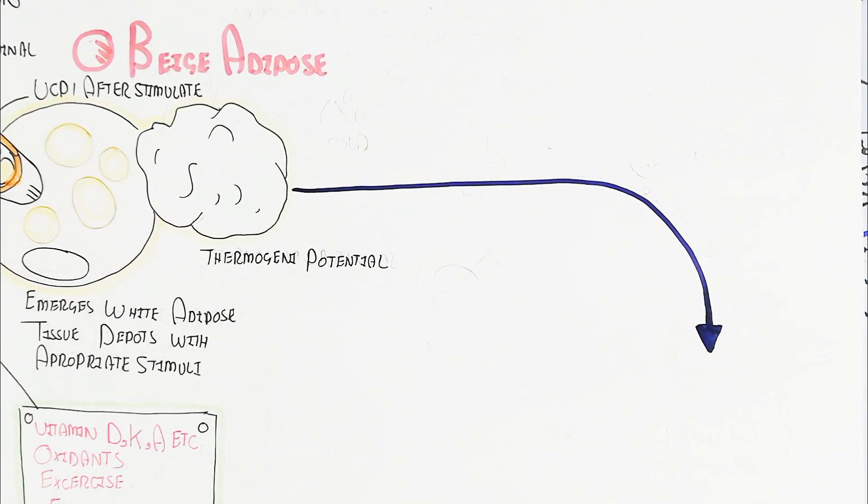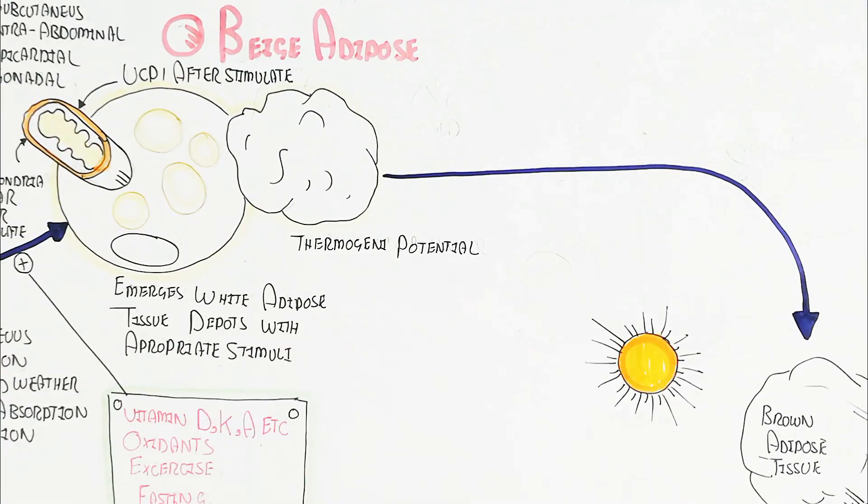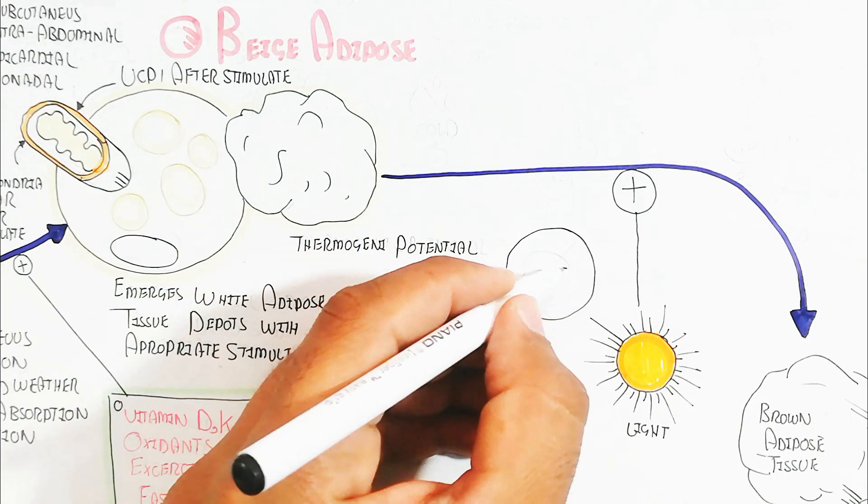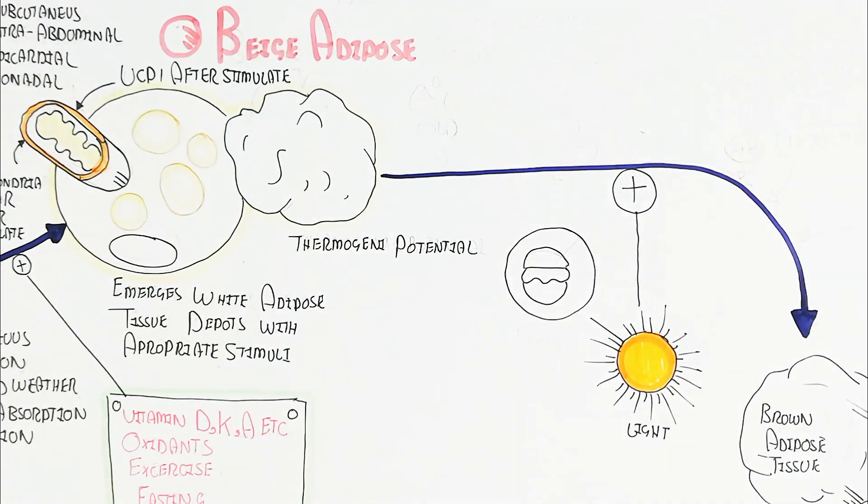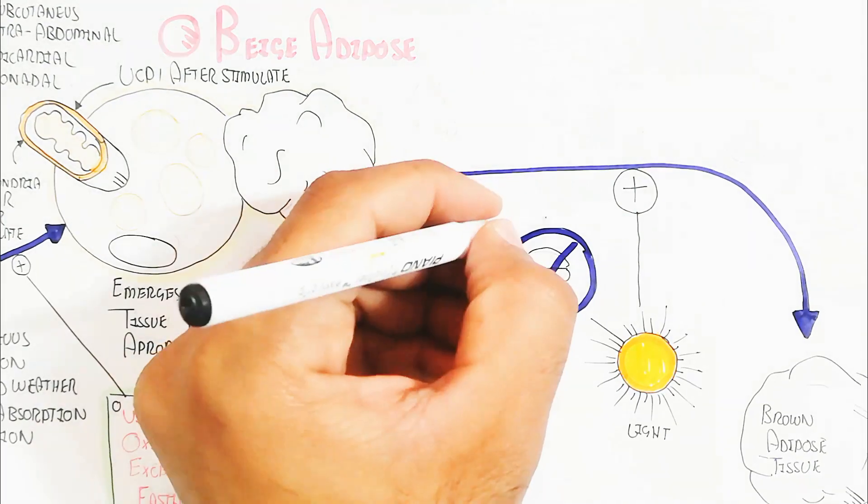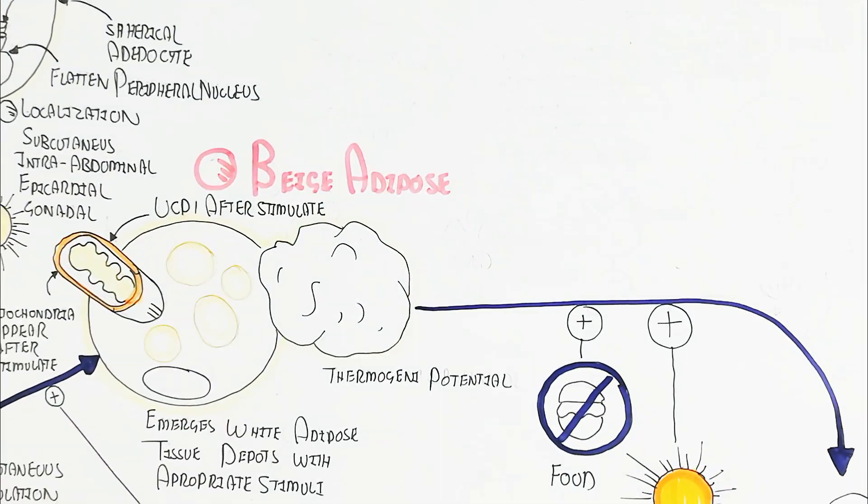After this, it will be converted, for example, into the brown adipose tissue. Certain factors are involved for this conversion. Like light, food, inhibition during the fasting time. So, more lipolysis will lead to cause more browning.